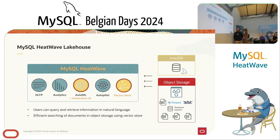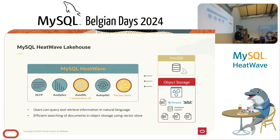Both Ken and I talked about MySQL HeatWave Lakehouse and how it allows us to process data from object storage as well as InnoDB tables. In addition to accelerating analytic workloads, it also offers additional functionality. In the near future, we'll see this extended to support Generative AI, and we will also add support for vector stores, so we'll be able to handle vector columns.